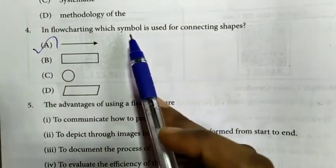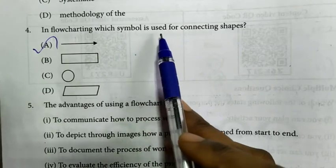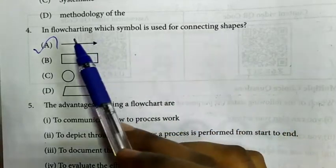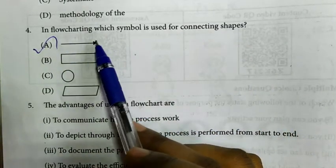Fourth question: In flowcharting, which symbol is used for connecting shapes? Answer is option A, that is flowline.